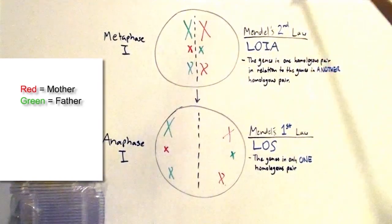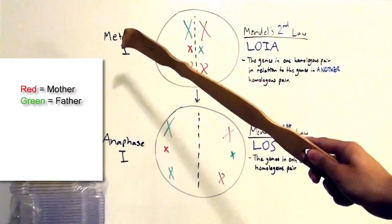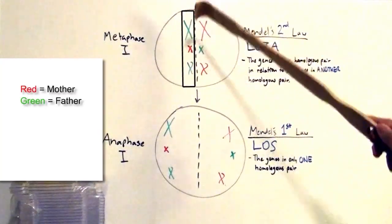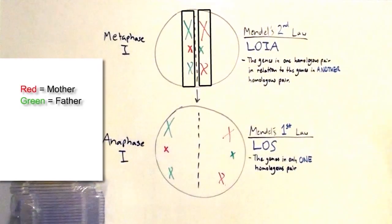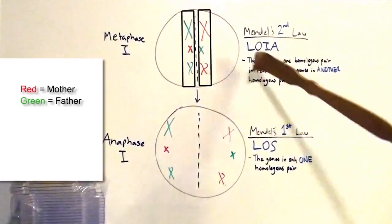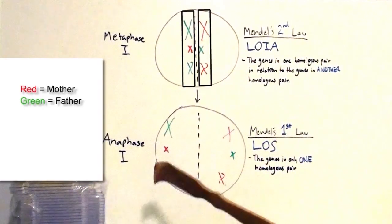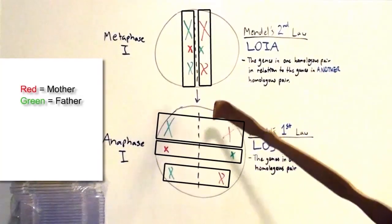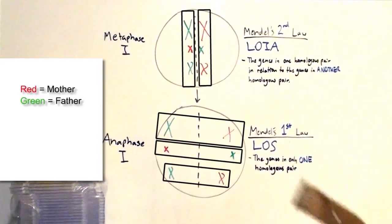The law of independent assortment says during metaphase one, all the greens do not need to be on one side and all the reds do not need to be on the other. Basically, you can mix and match which colors you want on different sides. Once you've done that, the law of segregation says during anaphase one, the homologous chromosomes will separate onto opposite sides of the cell.